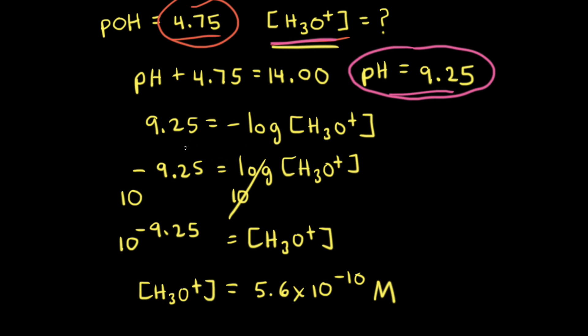Notice that because we had two decimal places for our pH, we have the concentration of hydronium ions to two significant figures.